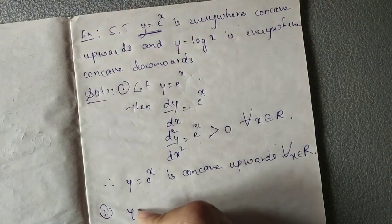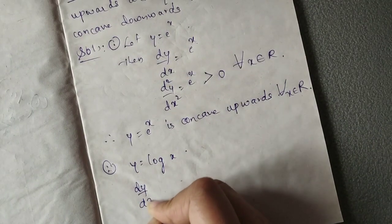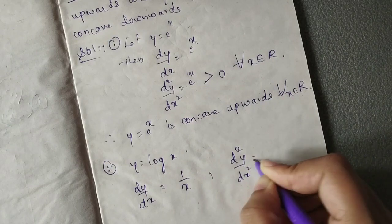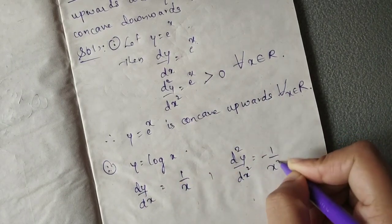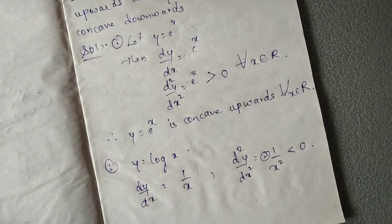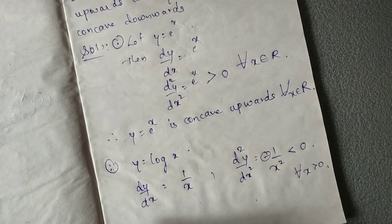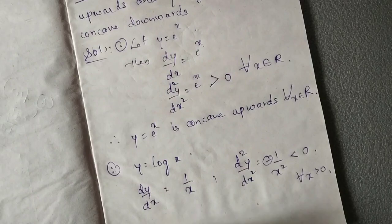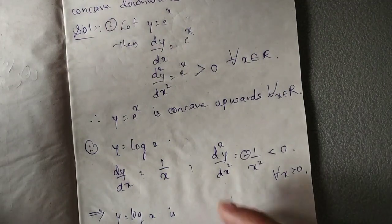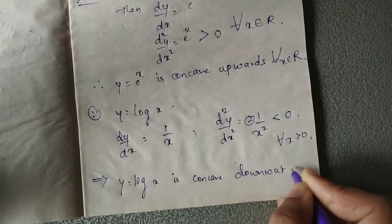Let us go for the second curve y equal to log x. We need the derivative dy by dx. The derivative of log x is 1 by x. Similarly, the second derivative d squared y by dx squared gives the derivative of 1 by x, which is minus 1 by x squared. The minus sign implies d squared y by dx squared is negative for all x greater than 0, which implies the given curve y equal to log x is concave downwards.